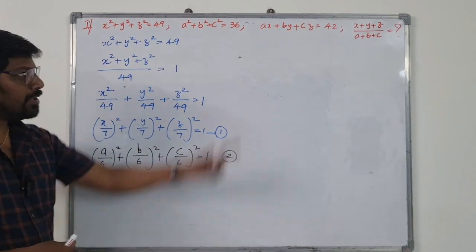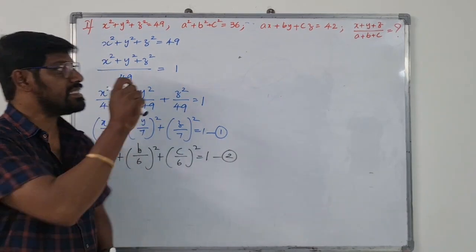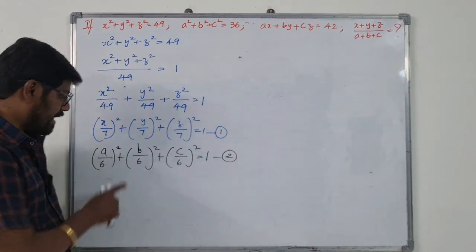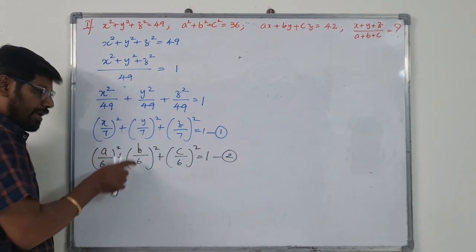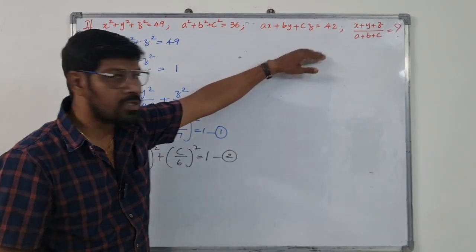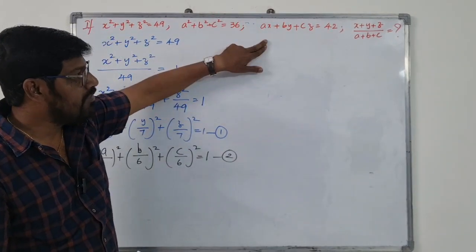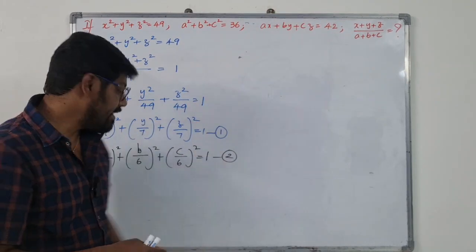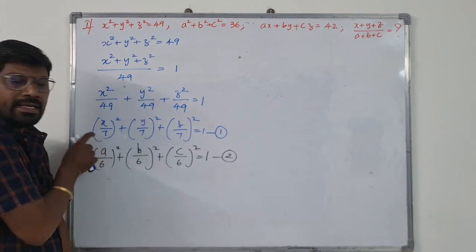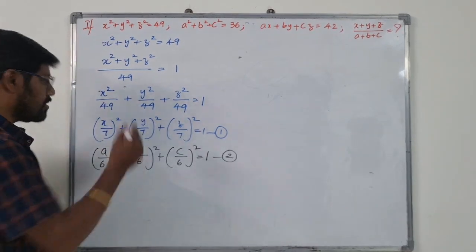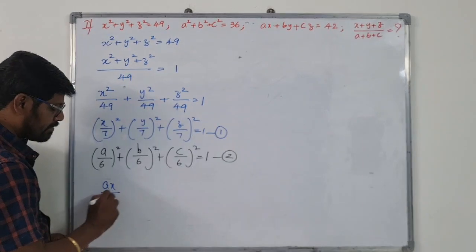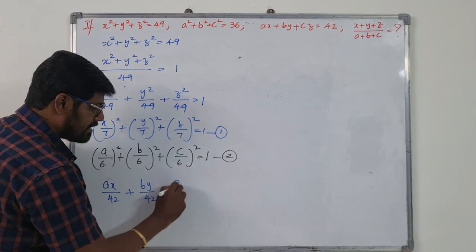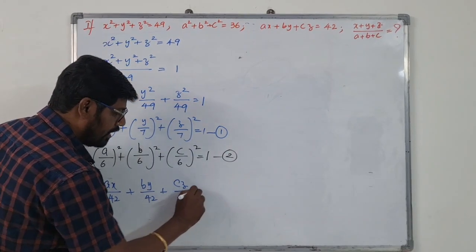The third equation is ax plus by plus cz equals 42. Transposing and separating: ax by 42 plus by by 42 plus cz by 42 equals 1. This can be written as (a by 6)(x by 7) plus (b by 6)(y by 7) plus (c by 6)(z by 7) equals 1.